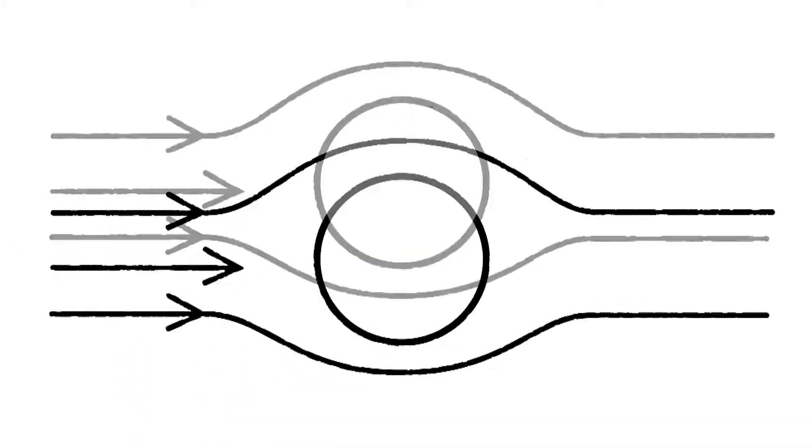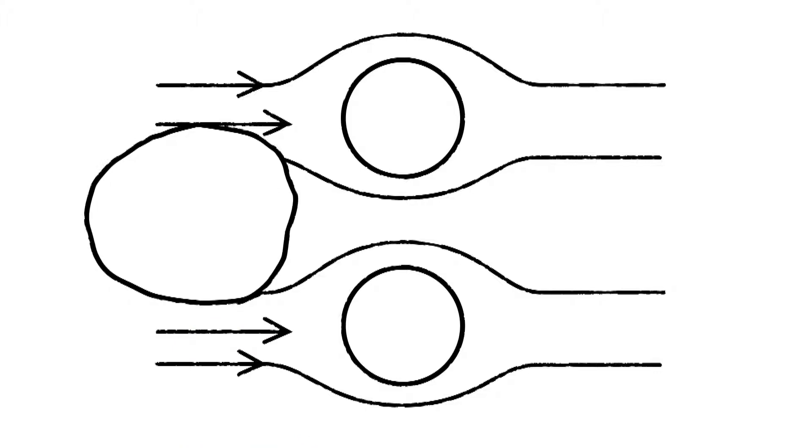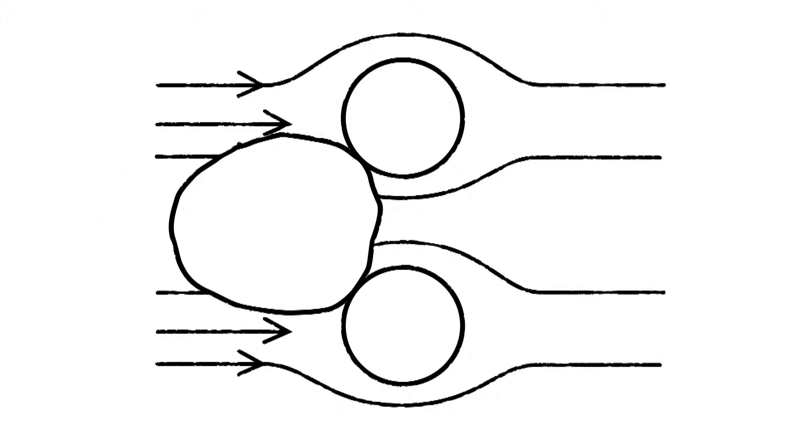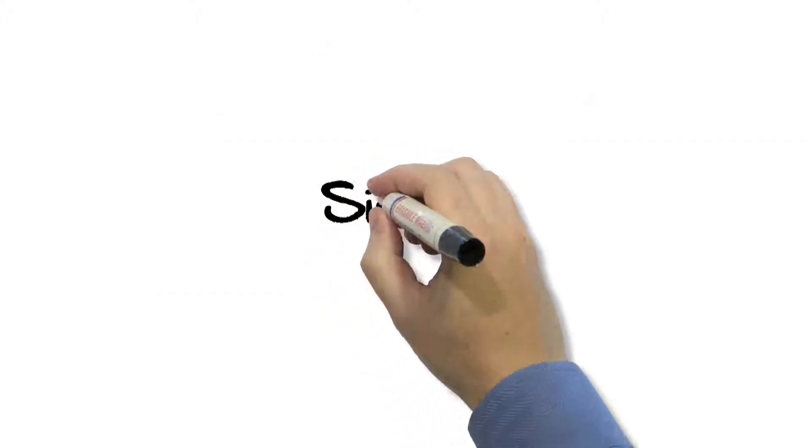If you have a very large particle entering the airstream here and the diameter of that particle is larger than the distance between the fibers in the filter, it's going to be caught like in a sieve, and that mechanism is called sieving. Easy to remember.